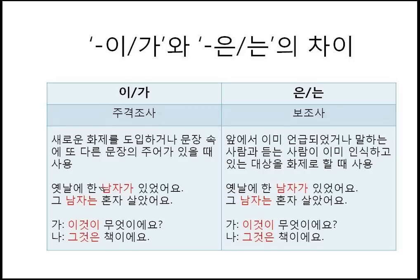When a character is newly introduced in the story, 가 is used. But from the second mention onward, 는 is used. For the first time, 가 is used when the character is newly introduced. But from the second part, 는 is used.